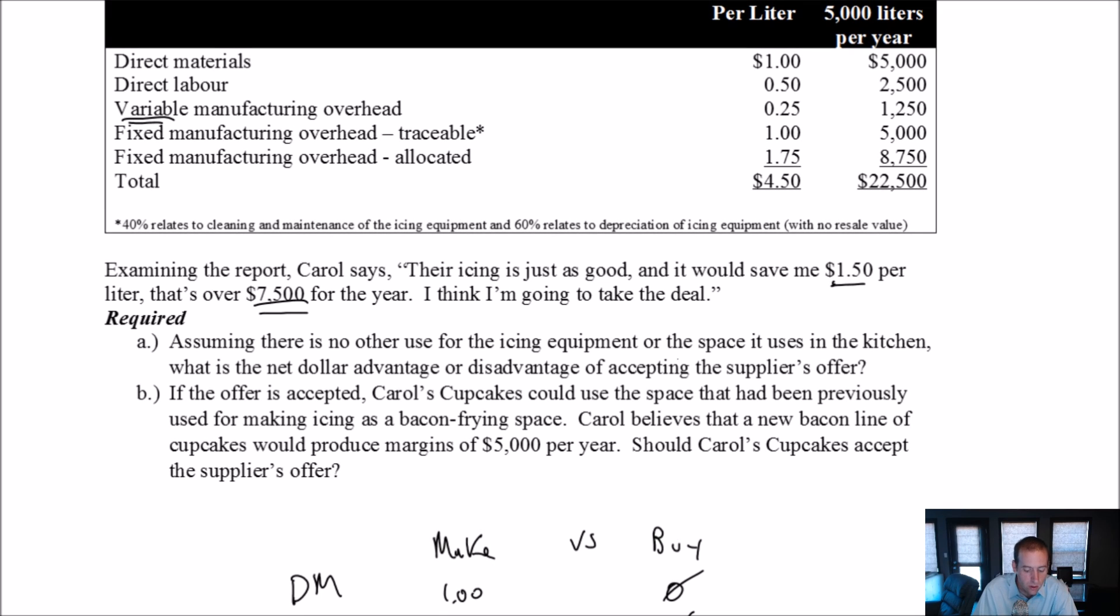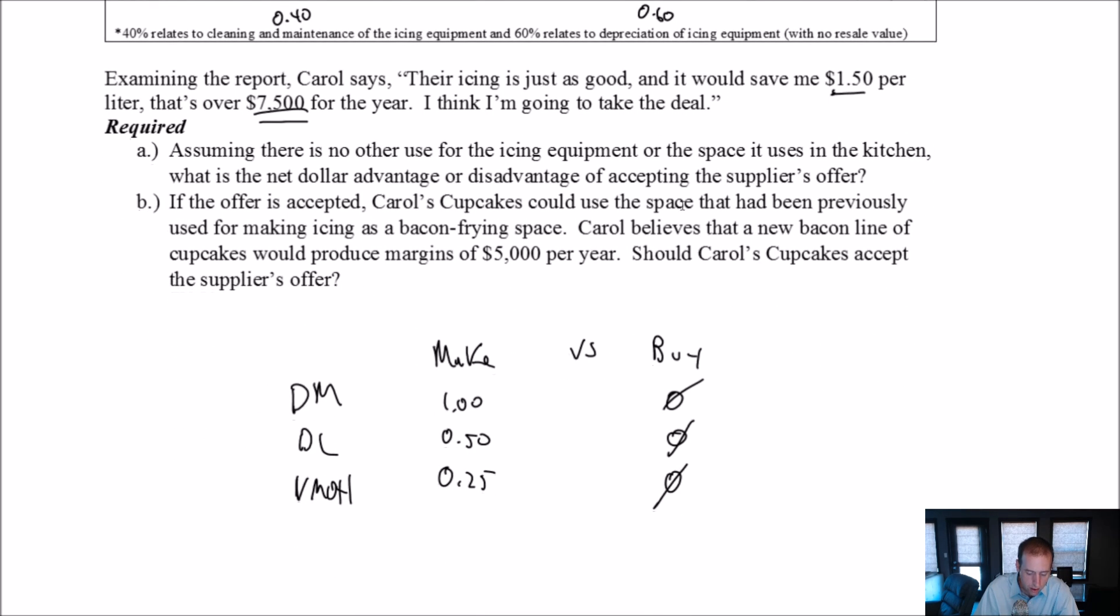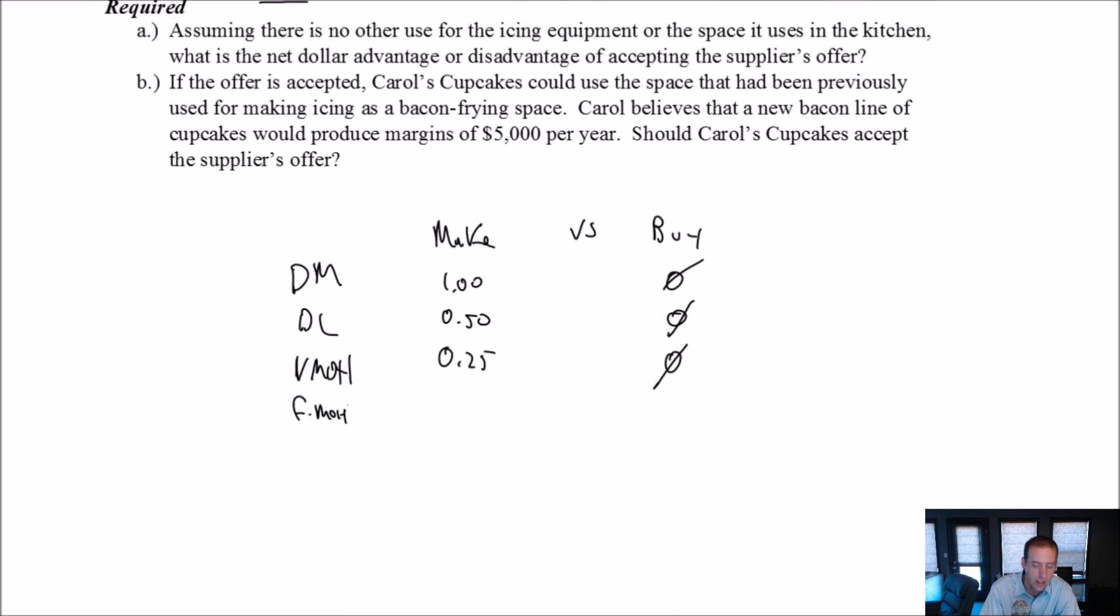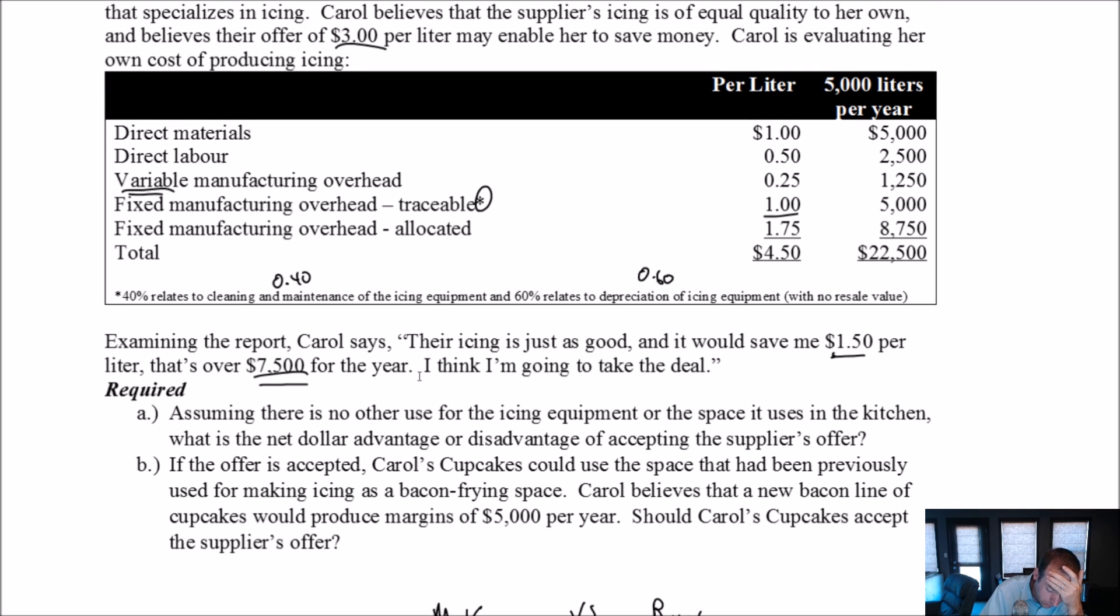Fixed overhead traceable. And there's a little asterisk and it says a dollar. It says 40% relates to cleaning and maintenance of icing equipment. So 40 cents relates to cleaning of icing equipment, 60 cents, 60%, which 60% of a dollar is 60 cents. So 60 cents relates to the depreciation of icing equipment that has no resale value. Okay. So this is fixed overhead. And when we say traceable, we mean that they can be traced directly to making icing. This is like icing related fixed overhead. So we got to say, are either of these relevant?